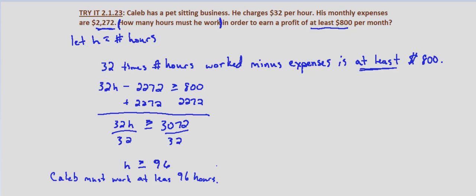How do we check this? Let's plug in a few numbers into our inequality and verify that the first one where he's making at least $800 is 96 hours.